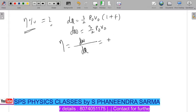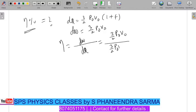dw by dq. What is the amount of work done here? 3/2 p0 v0. What is the amount of heat energy supplied to the system? 3/2 p0 v0 (1+f). So upon cancellation of numerator and denominator...